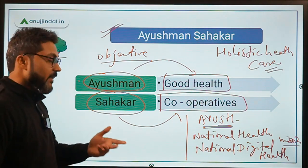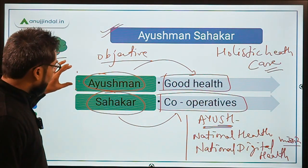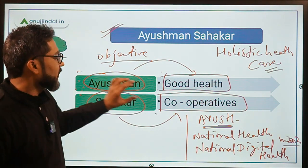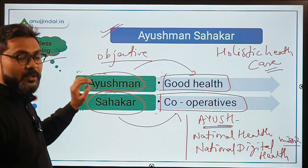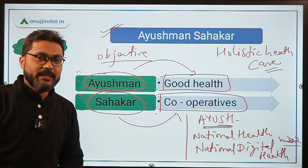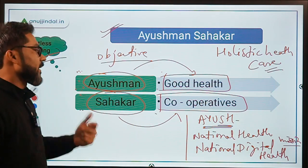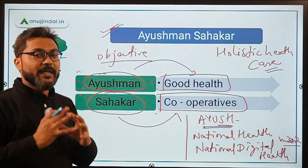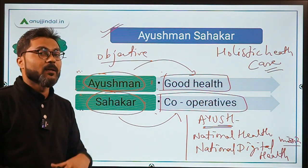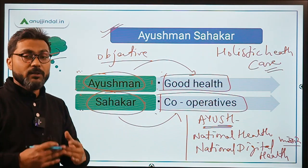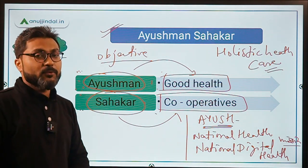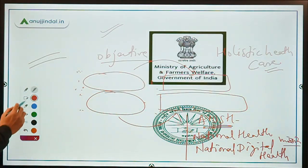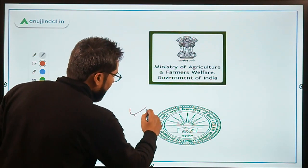To recap the objective: Ayushman means good health and Sahikar means cooperative. You can also relate Ayushman with the Ayushman Bharat Yojana, which is related to the health sector. Through this scheme, the government wants to promote holistic healthcare with the help of cooperatives so they can improve health outcomes across the country.